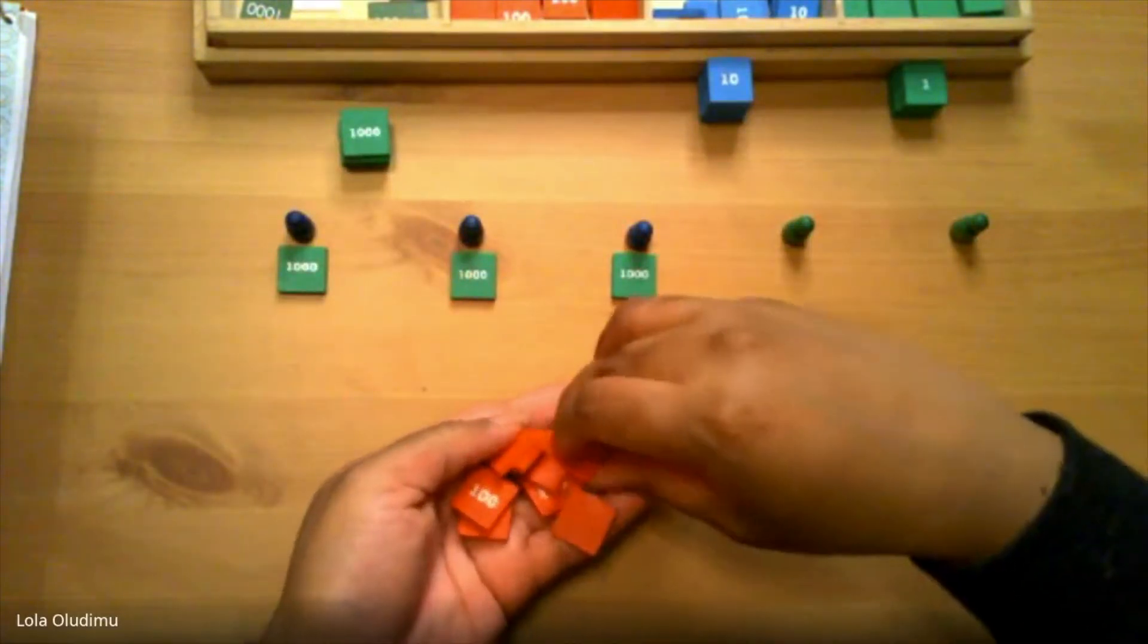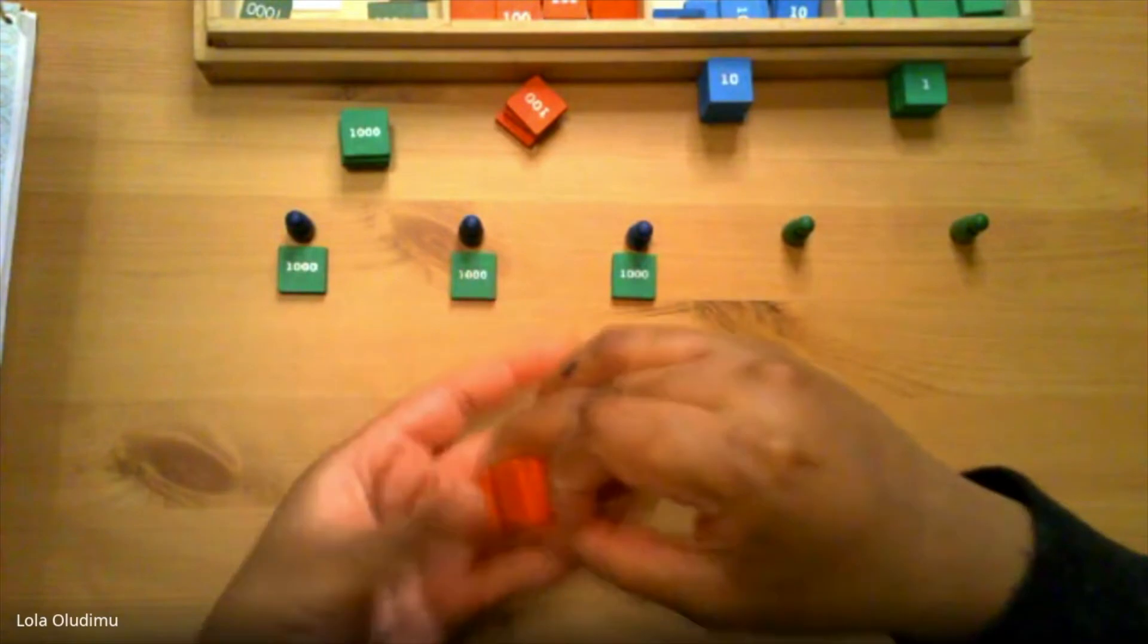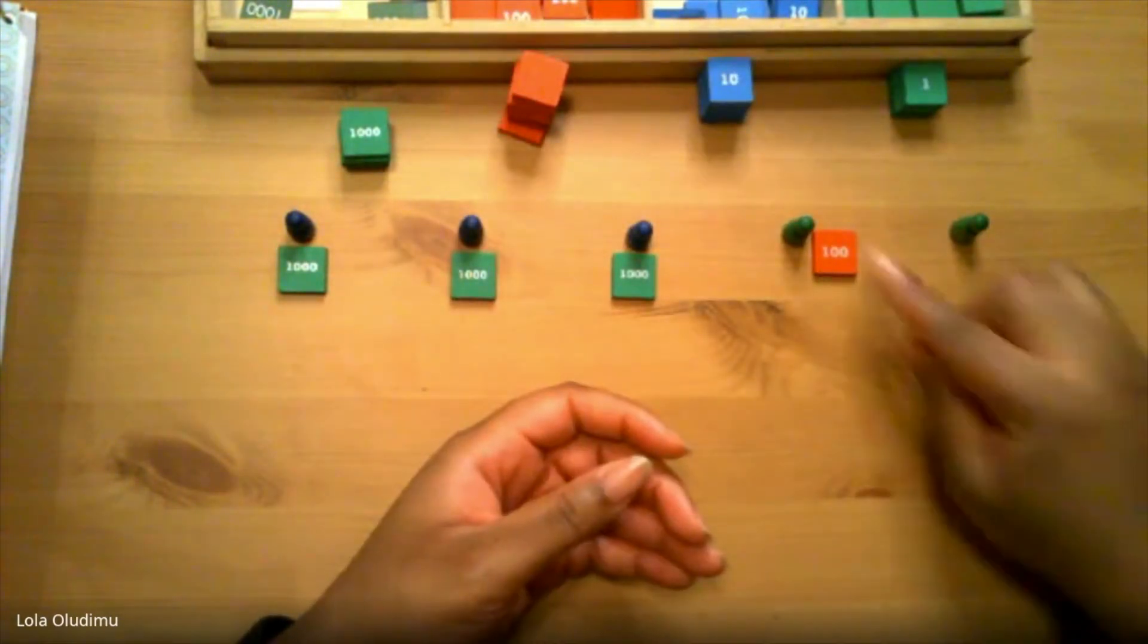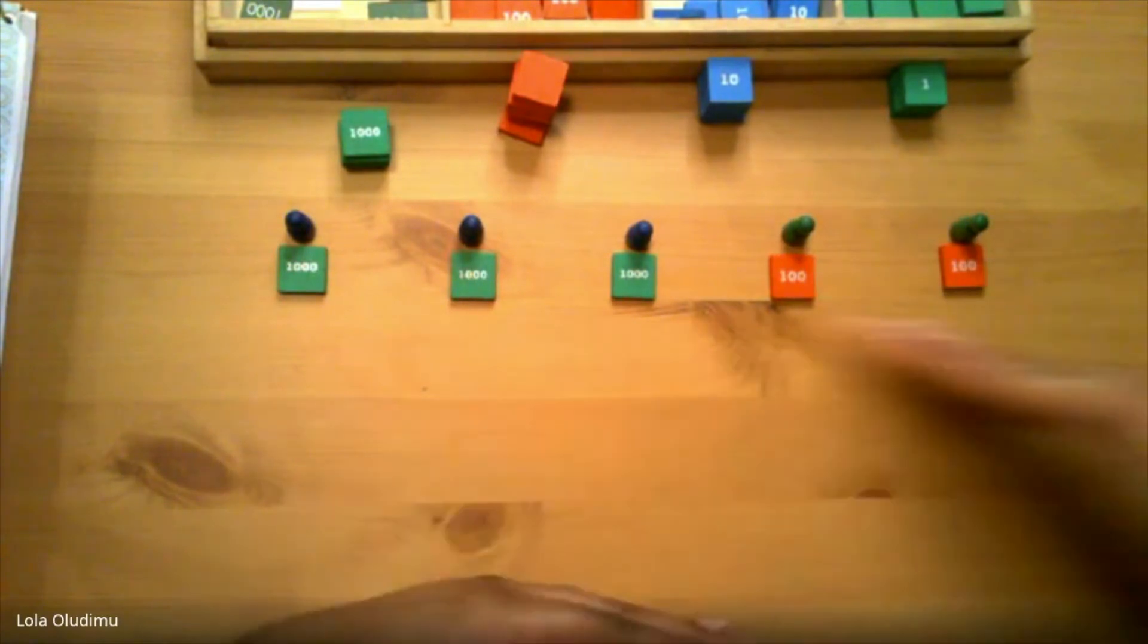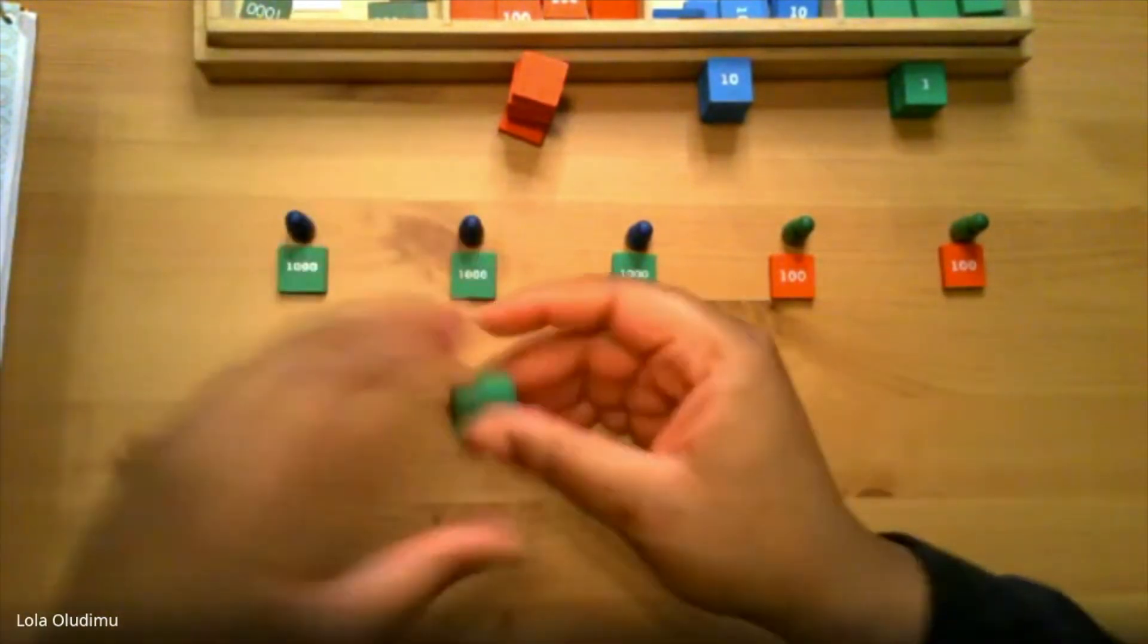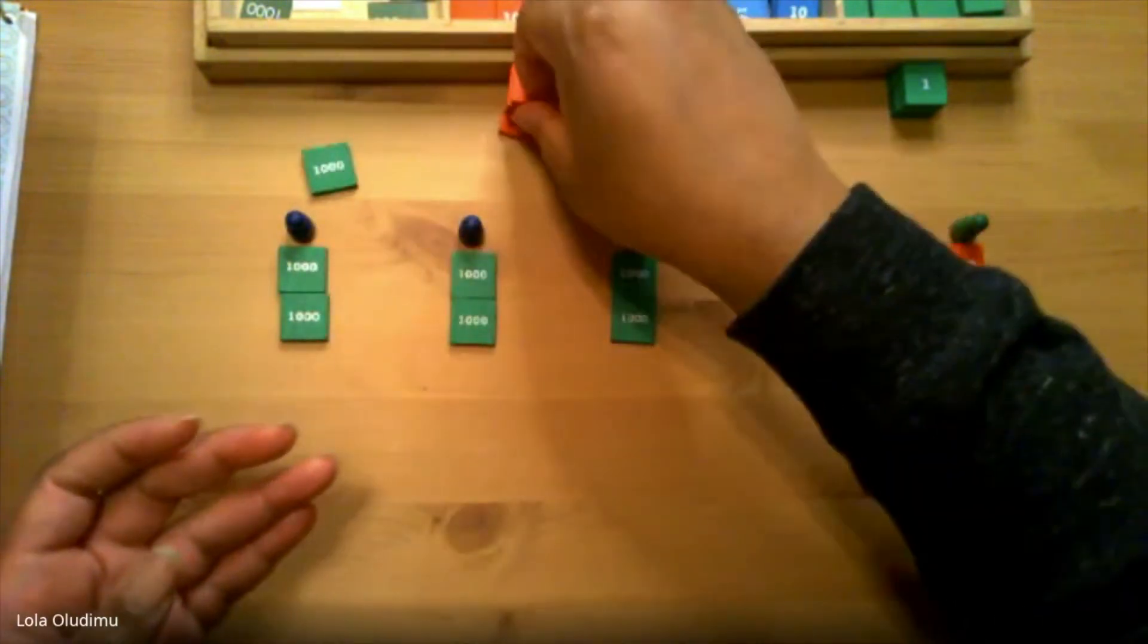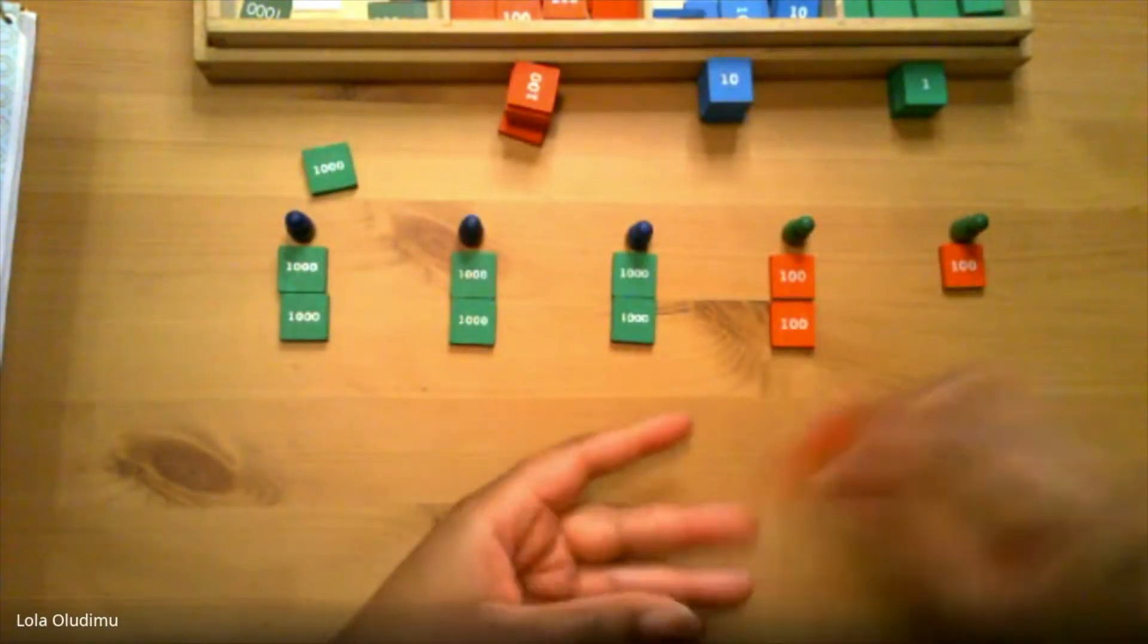Now I am going to stack them. Each unit skittle gets one hundred. And now that is fair because one unit is one category below one ten.